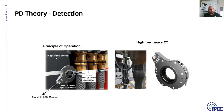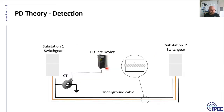For underground cables we use a HFCT — a high frequency current transformer. HFCTs come in different shapes and sizes depending on where they're applied. We can apply the HFCT to the cable earth sheath, or around the core of the cable. The HFCT needs to be installed on one or the other — it cannot be installed where it captures both.